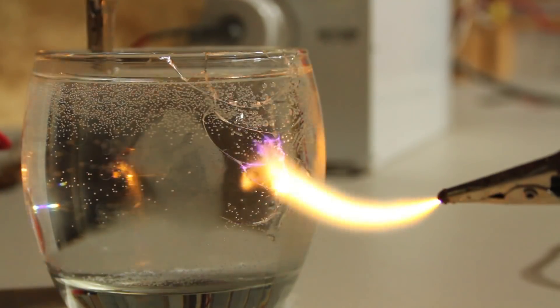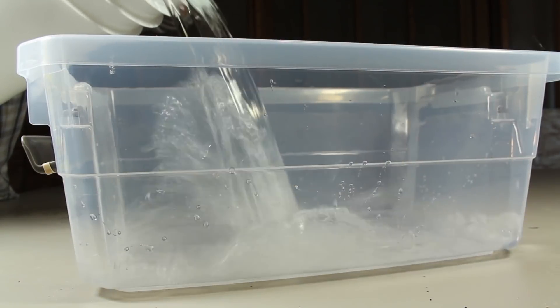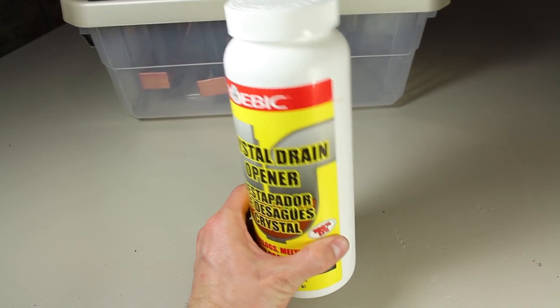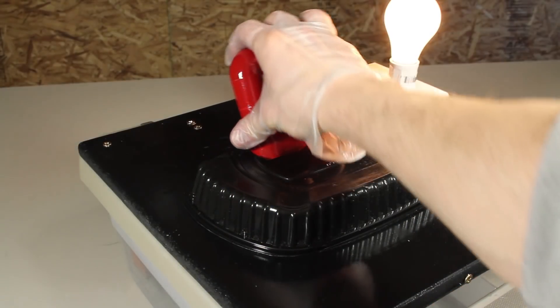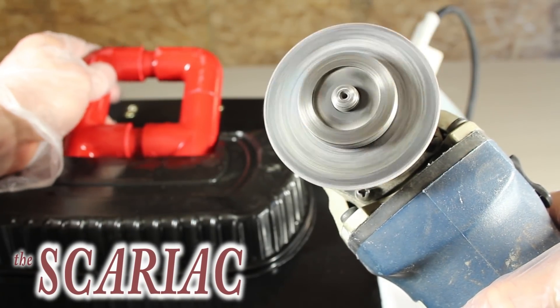Mixing water with electricity is typically discouraged, and for good reason. But in this project, we're pumping electricity into water with a bit of drain cleaner to create a poor man's power controller. You might have heard of a Variac. This is the Scariac.